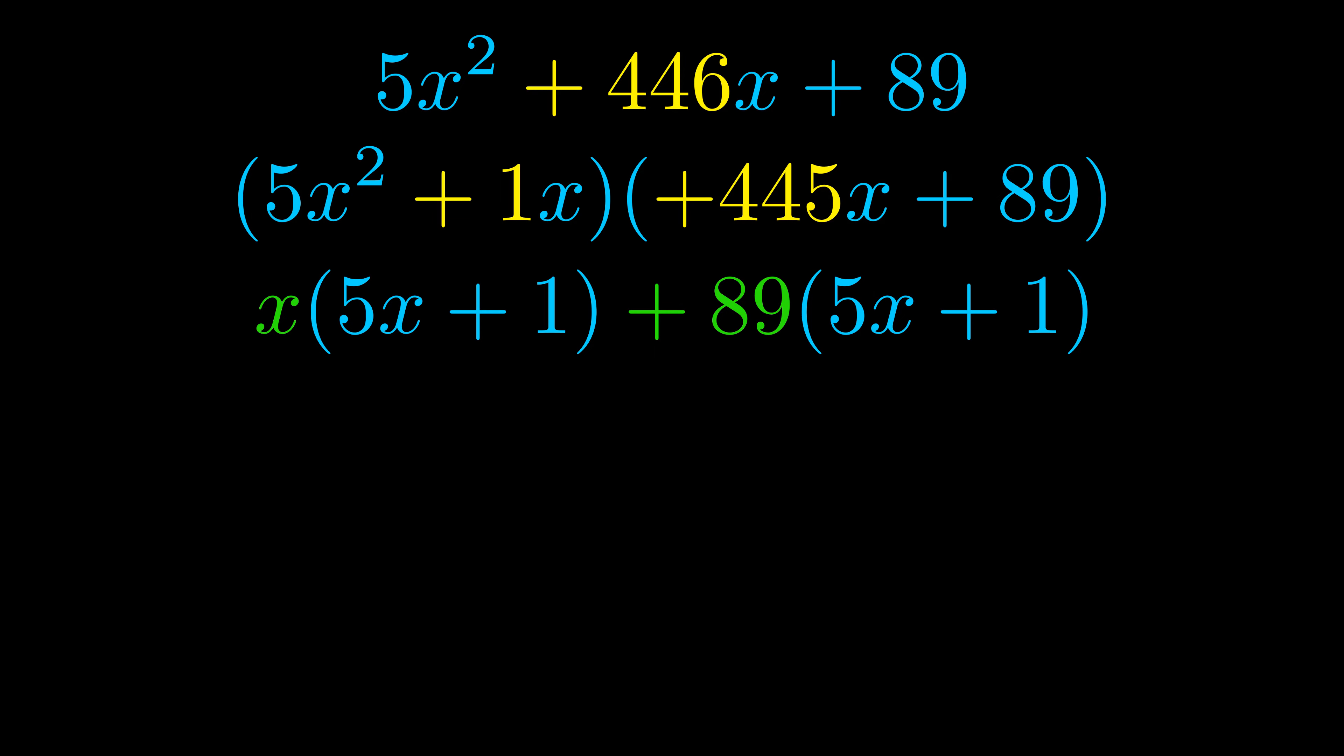Notice also how what remains inside of the parentheses is the same in both cases. The blue values are the same. Those blue values will become one of our factors and we will combine the two green values, the GCFs that we pulled out, to get the other one. And that is our fully factored equation.